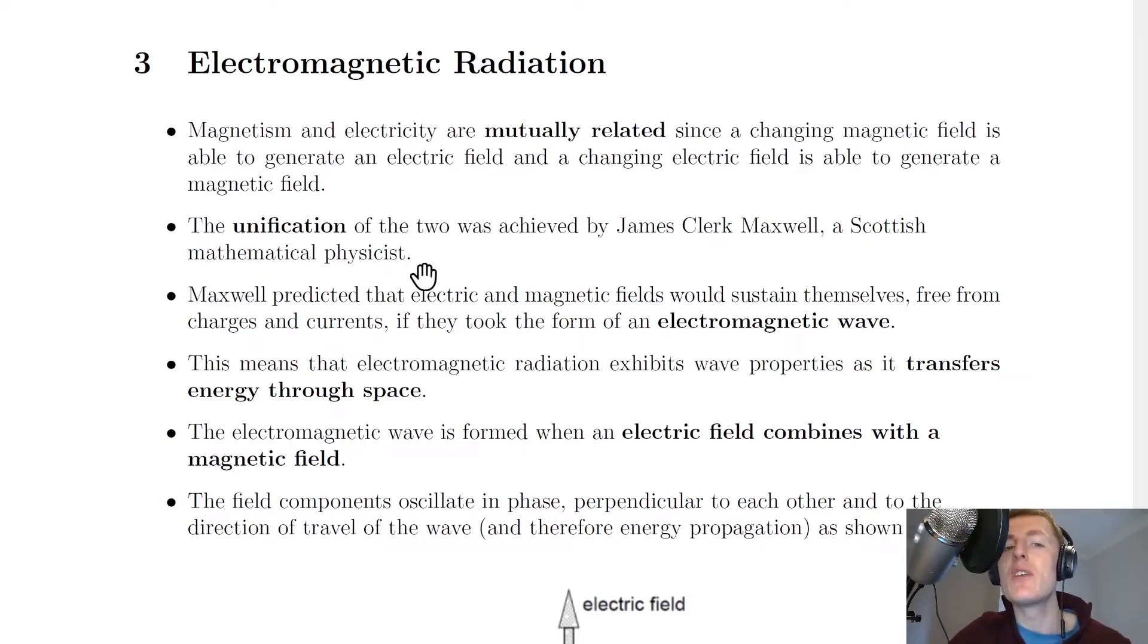The unification of the two was achieved by James Clerk Maxwell, a Scottish mathematical physicist. By unification, we mean the combination of magnetism and electricity into electromagnetism.